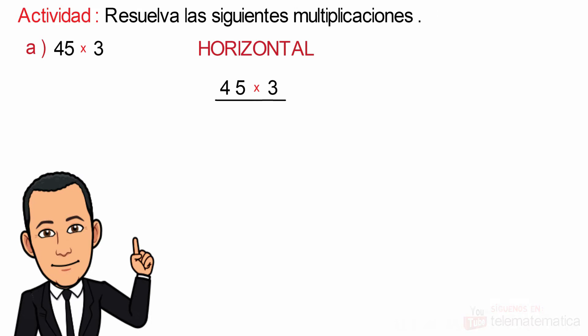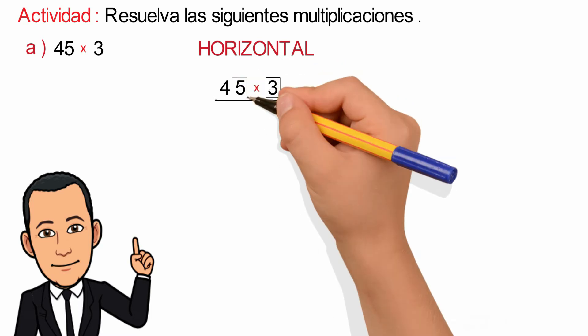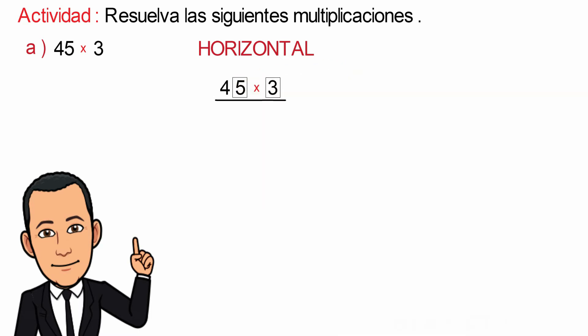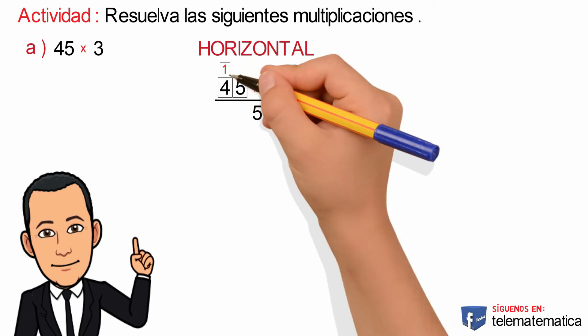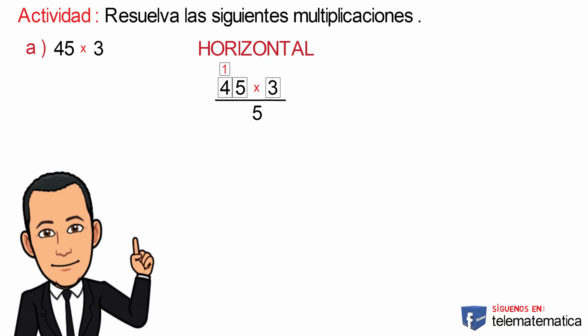We multiply the number 3 by the number 5, which corresponds to the unit, which would give us 15. We write the 5 and carry 1, which we place above the 4, and repeat the procedure. We multiply the number 3 by the number 4, which corresponds to the tens, giving us 12 plus 1 that we carry, equal to 13, and this would be the result.